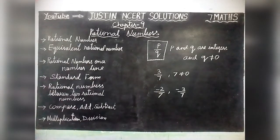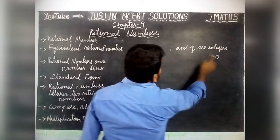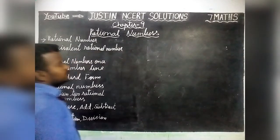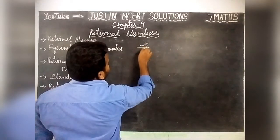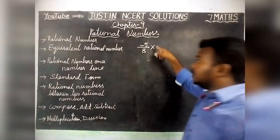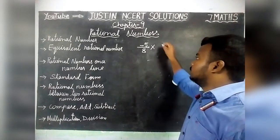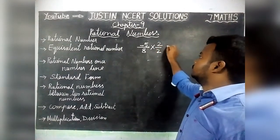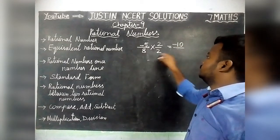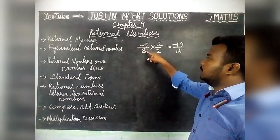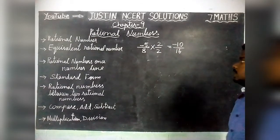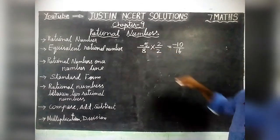Next, we are going to see Equivalent Rational Numbers. We will take a Rational Number: minus 5 by 8. If a number is multiplied and divided by the same number, it will give another Rational Number. So minus 5 by 8 and minus 10 by 16 are equivalent Rational Numbers, because if you simplify minus 10 by 16, you will get again the same number: minus 5 by 8.